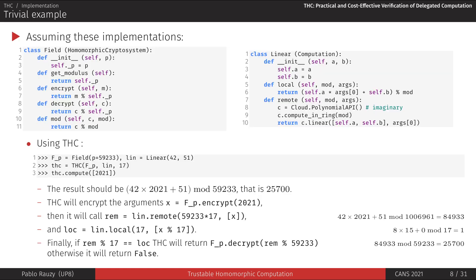To make things clear, here is a trivial example without any encryption and an imaginary third party that allows performing modular computations. We can see that using THC amounts to instantiating the THC class with an instance of our homomorphic cryptosystem, a computation, and of course our security parameter — here we use 17. Let's actually run this example.